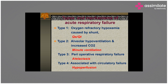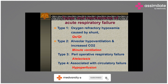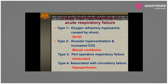Type 4 respiratory failure can result from cardiogenic, septic, or hypovolemic causes leading to circulatory failure. When cardiac output is low, the heart as a pump fails to deliver oxygen adequately — just as a water pump failing to circulate water to all households. When the heart is not working properly, oxygen delivery and blood supply to organs like the liver and kidneys is compromised, leading to hypoperfusion.